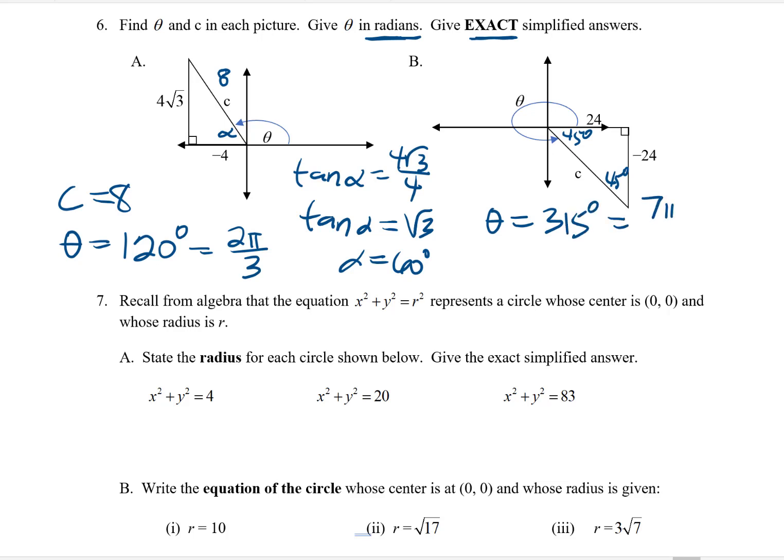And then the c, I can get from using the 45-45-90 pattern. In that pattern, the hypotenuse is always √2 times as much as one of the legs, so c must be 24√2. Of course, I could have found c using the Pythagorean theorem. I could have found theta by setting up a trig ratio, as we were talking about. But I think the way I worked the problem is the simplest way to go.